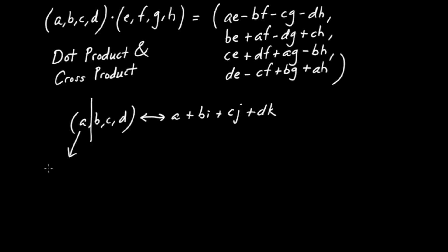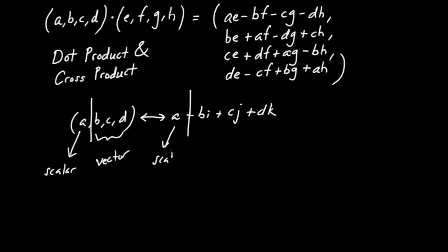This A is called the scalar part. It's called a scalar because quaternions of the form (A, 0, 0, 0) operate just like scalars — they multiply by two, they scale it up by two or three or whatever. So that first part is the scalar part. This triplet here, the B, C, D — or this three-vector — is called the vector part.